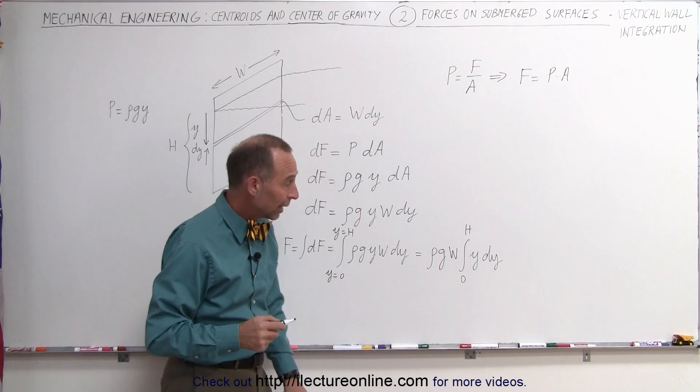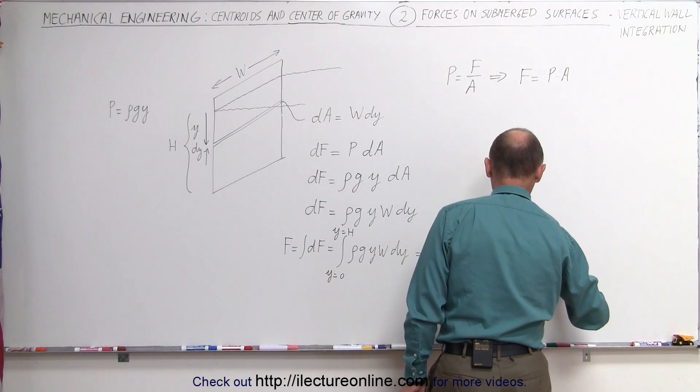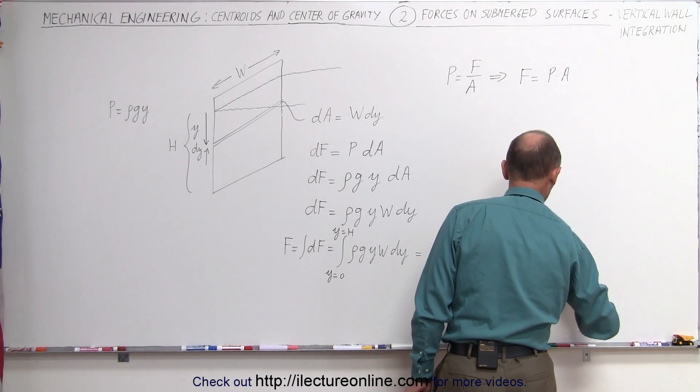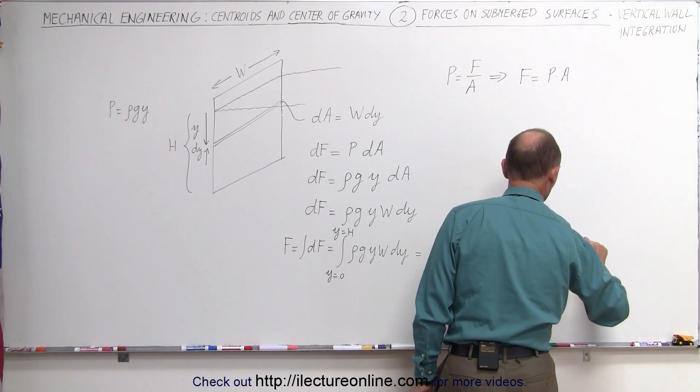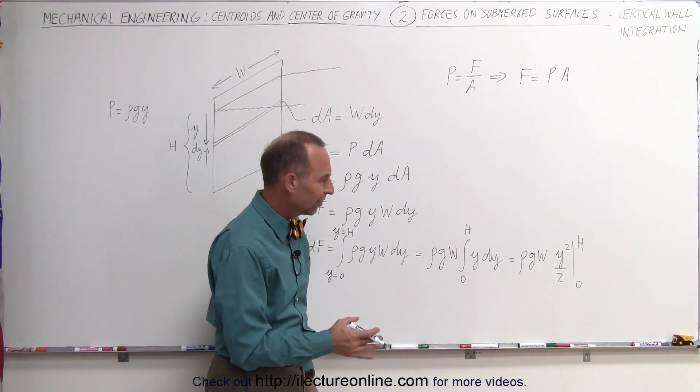When we integrate that, we get ρ, g, w, times y squared over 2, evaluated from zero to h. And finally, when we plug in the upper limit, because we plug in the lower limit, we get zero.